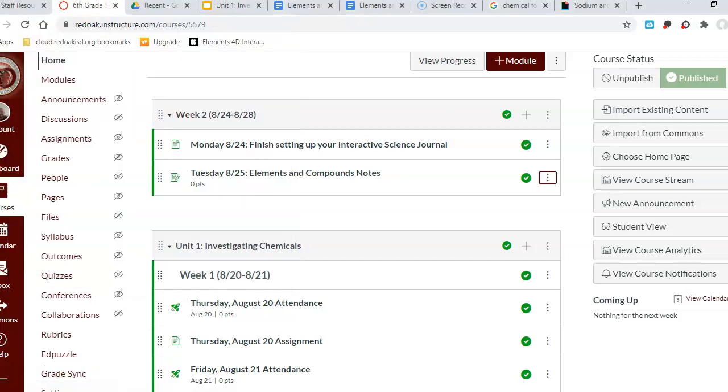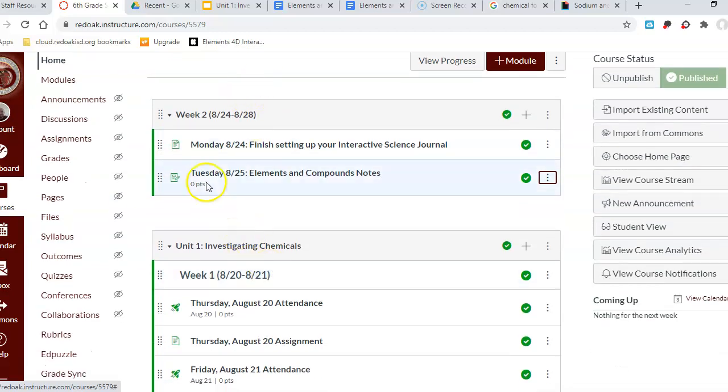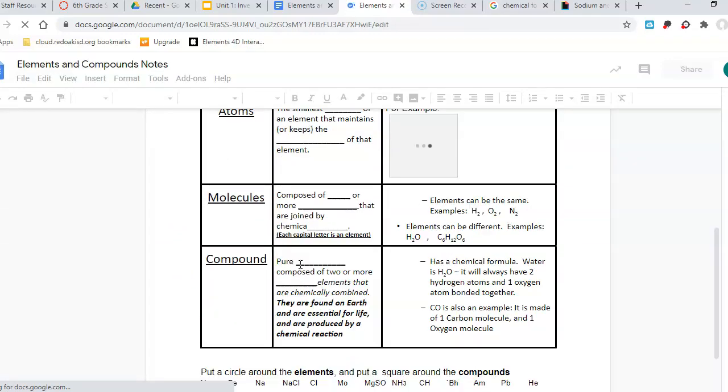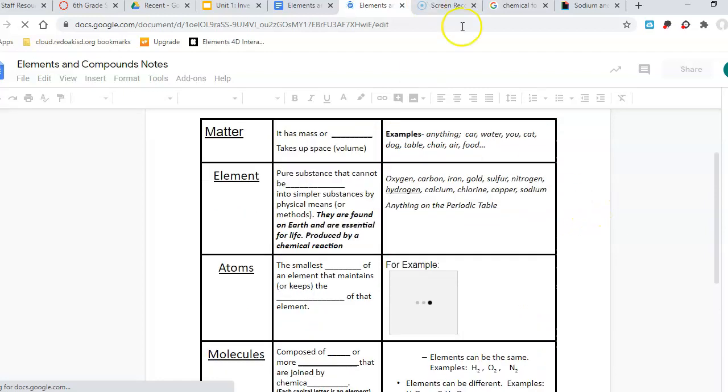So first what you're going to want to do is log on to Canvas and you'll log into your course and you will find Tuesday 8-25 elements and compounds notes. Here I have the instructions listed for you. In this assignment I'm going to provide you two documents. One is a blank copy of the notes. If you want to print these out and fill them out as you listen to the video you are welcome to do that and I encourage you to do that.